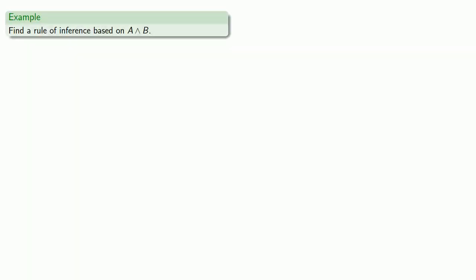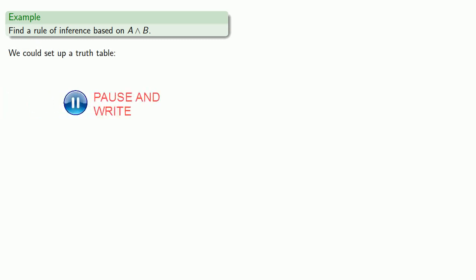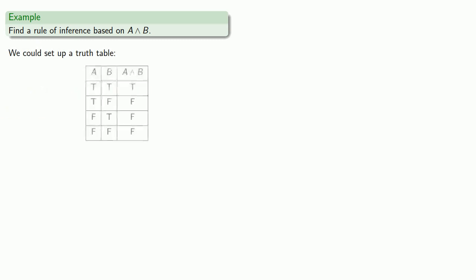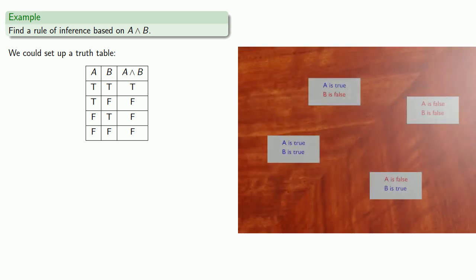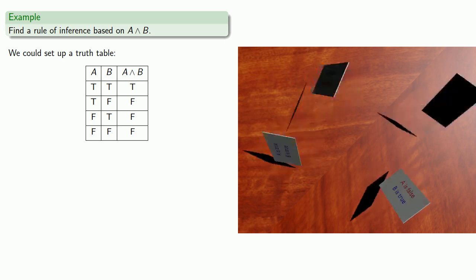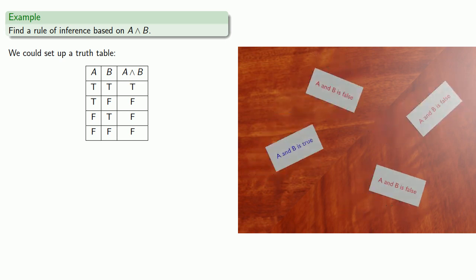For example, let's find a rule of inference based on the conjunction A and B. To begin with, let's set up our truth table for this conjunction. Each row in the truth table corresponds to a certain assignment of the truth values of A and of B, and that in turn gives us a truth value for the conjunction A and B.